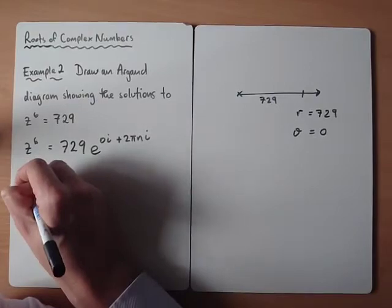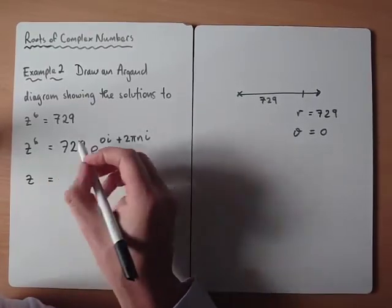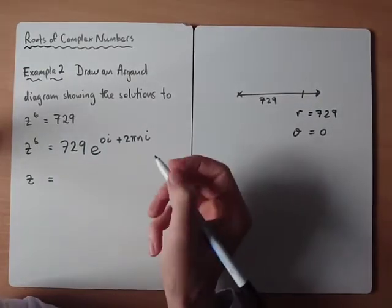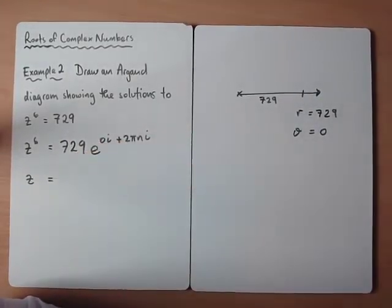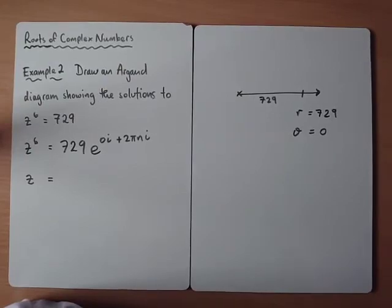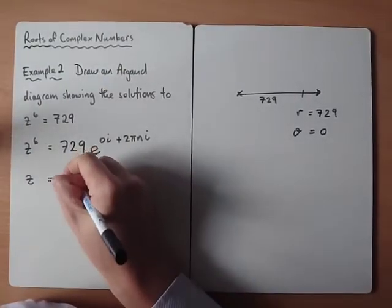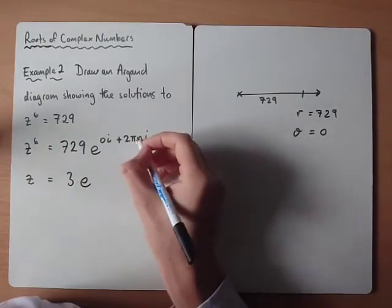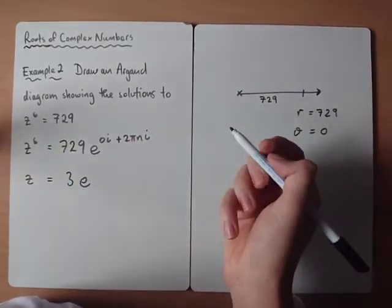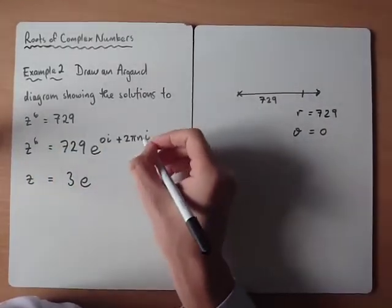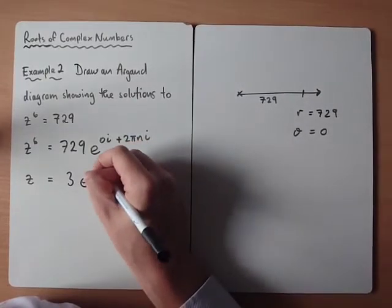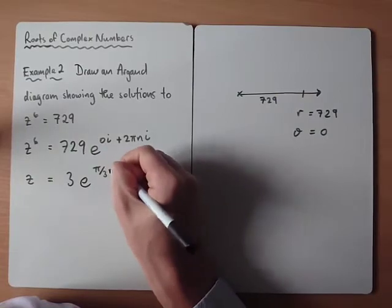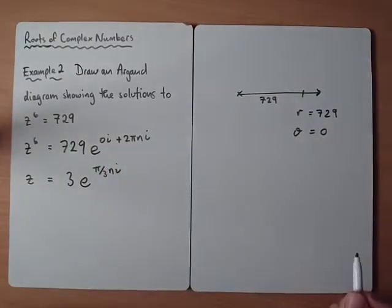And then we'll take the 6th root. So if we raise it all to the power of a sixth, we've got 729 to the power of 1 sixth, which is 3. I did just check that on the calculator, but it is 3. And then we get, if we divide, if we raise this to the power of 6, we're multiplying it by 1 sixth. So 2π divided by 6 would be π over 3i.